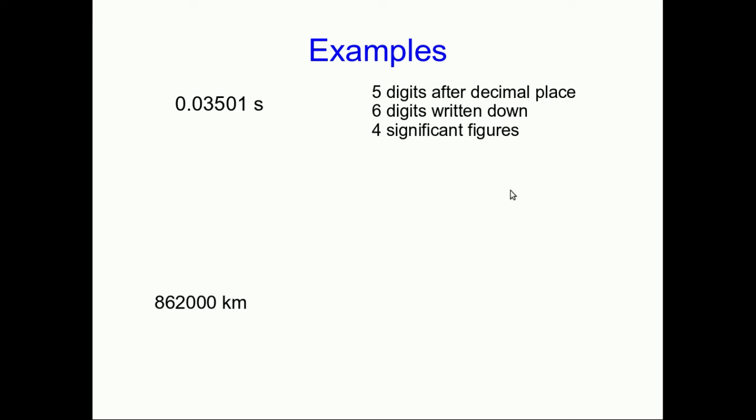Look at this first number that I've written, 0.03501 seconds. I'm going to tell you it has five digits after the decimal place. Well, just count them. And there are six digits written down because there's the zero before the decimal place. But it only has four significant figures. Those first zeros are not significant figures. They're placeholder zeros. They're there to tell you that that first digit, the three, is in the one hundredths of a second place. So they're establishing the order of magnitude. They're not telling us anything about what digits we actually know. And so this is the same as writing 3.501 times 10 to the negative two seconds. And if you write it that way, it's clearer that it has four significant figures.